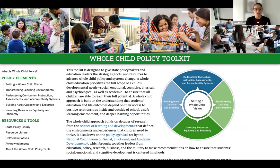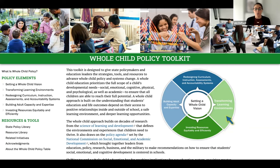The toolkit lays out a roadmap for whole child policy. Within the toolkit, you will find research, policy actions states can take, state policy examples, and resources across five key areas: setting a whole child vision, transforming learning environments, redesigning curriculum, instruction, assessment, and accountability systems, building adult capacity and expertise, and investing resources equitably and efficiently. We will cover each of these topics in upcoming webinars, but today we're going to focus on the first element: setting a whole child vision.